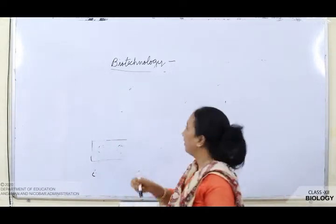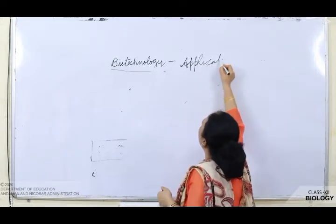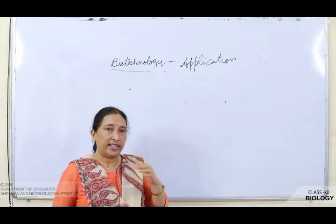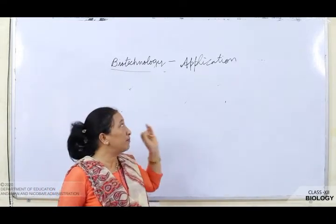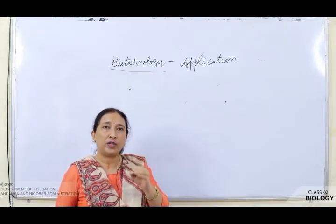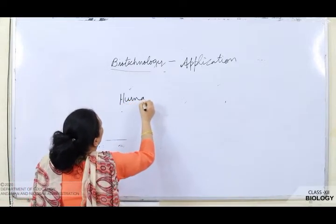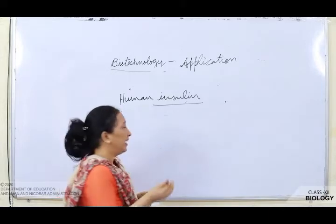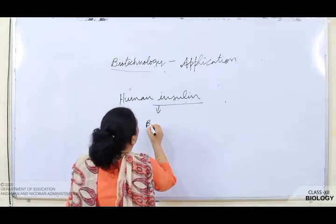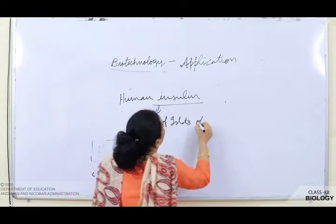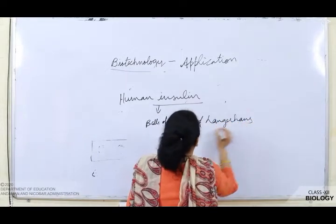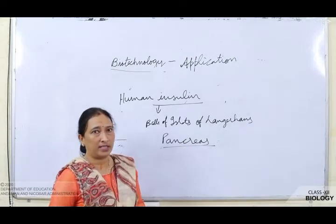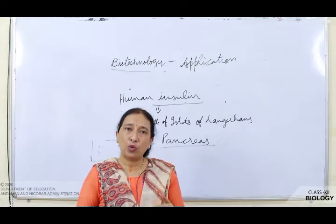In the next chapter, Biotechnology and its Applications, we saw how recombinant DNA takes place, what a plasmid is, and how it is utilized. Now we will see how human insulin is prepared. Why do we need insulin? Where is insulin synthesized? It is synthesized by the beta cells of the islets of Langerhans in the pancreas.